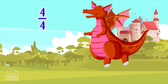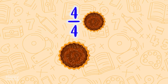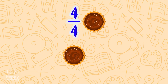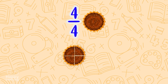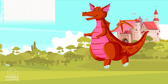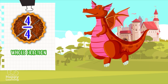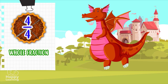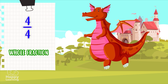Now, four fourths of a chocolate cake. That is to say, a cake divided into four parts, from which we have to give him four. Wow! The whole chocolate cake! Remember that four fourths is a whole fraction. No wonder he's got such a big belly!